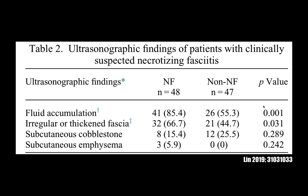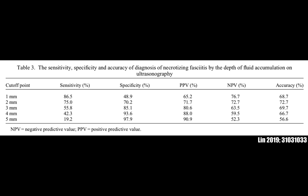One thing you can also do is look at the thickness of that fluid collection — the fluid collection just deep to the subcutaneous tissue. As that thickness increases, the specificity and positive predictive value both increase. So the thicker the fluid stripe deep to the subcutaneous tissue, the more likely it is to be an NSTI rather than plain cellulitis. Also, if you see air present, that is very unlikely to be cellulitis — so if you see air with a very thickened stripe, be highly suspicious for a necrotizing soft tissue infection.